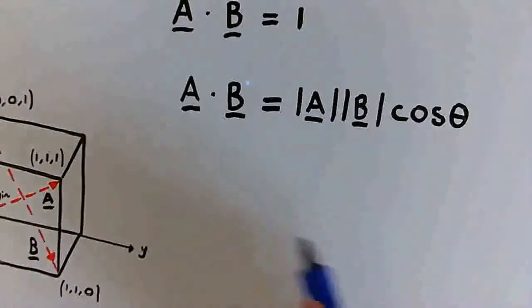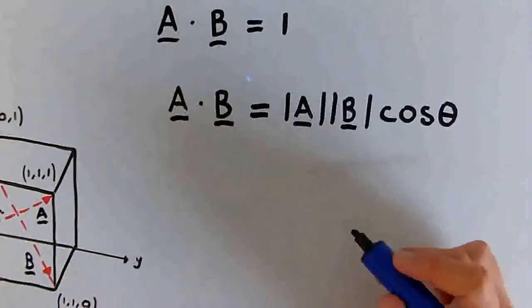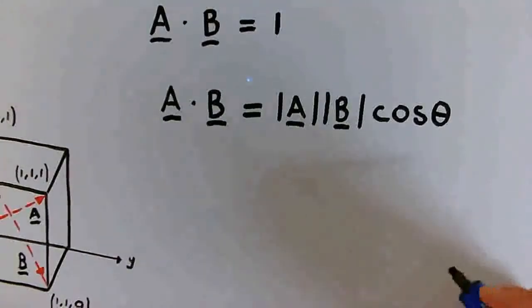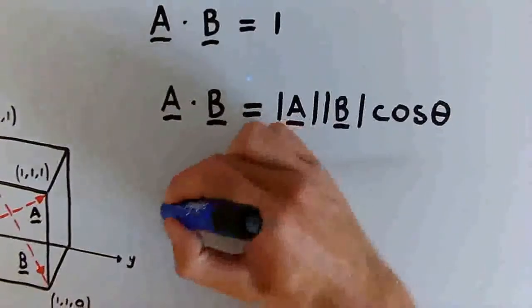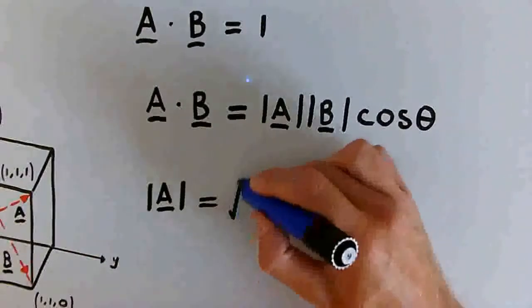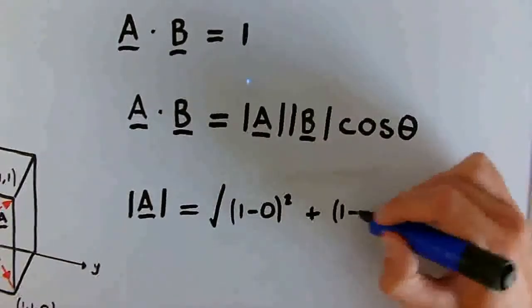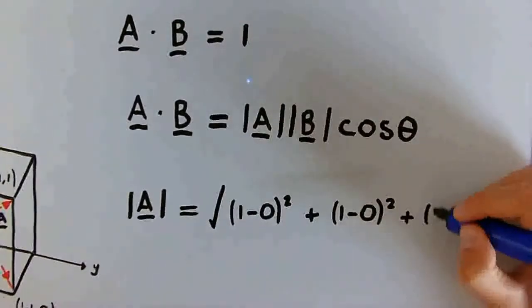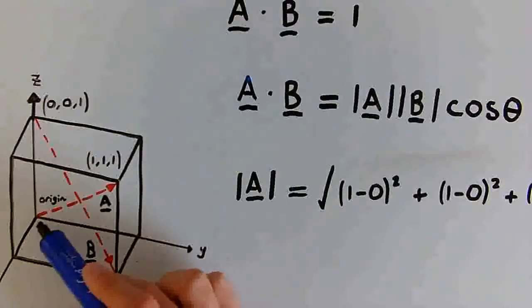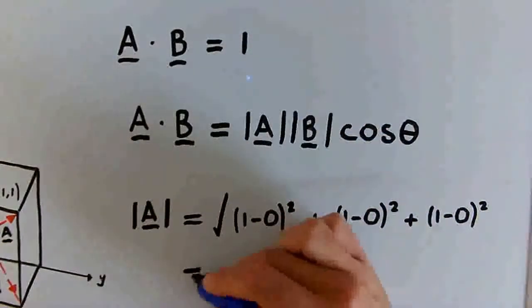So what we have to do now to find this angle is to find the magnitudes of the vectors A and B. We can find these magnitudes quite straightforwardly if we just remember how to work out distances in the 3D Cartesian coordinate system. The magnitude of vector A is just the square root of the differences in each coordinate squared. So we have the square root of 1 minus 0 squared, plus 1 minus 0 squared, plus 1 minus 0 squared. So this is just equal to the square root of 3.